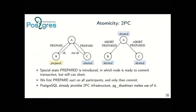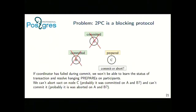The potential issue is that 2PC is a blocking protocol. If the coordinator — the node that sends prepare requests — fails during commit, we won't know the status of the transaction: should we commit or abort on a given node? This can happen not just from node failure but from network problems. For example, if coordinator node A already sent a commit request to node B, but node C is still in doubt — having lost connection with the coordinator — it doesn't know whether to commit or abort.